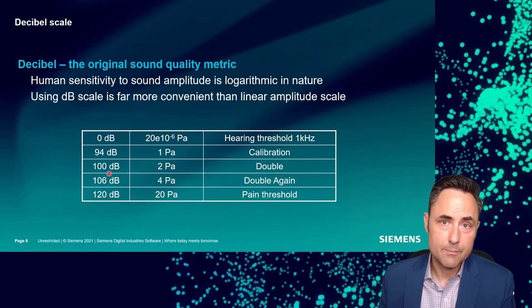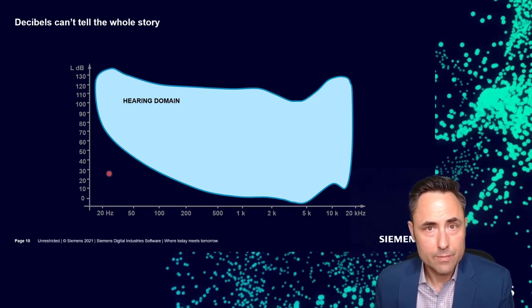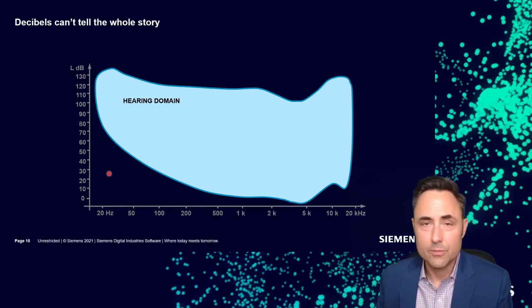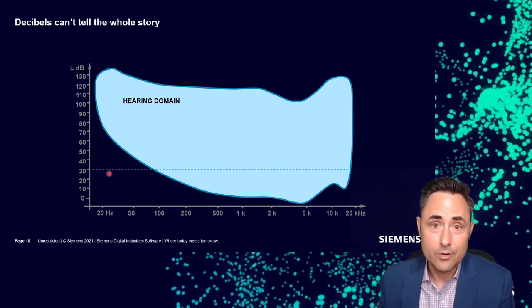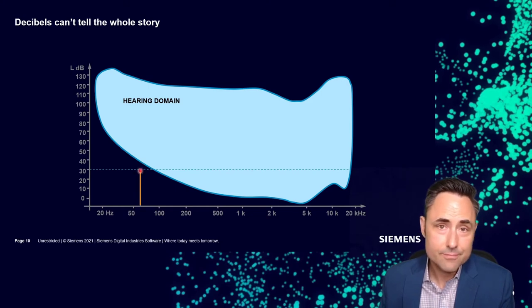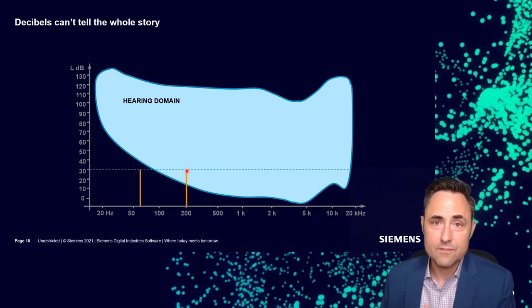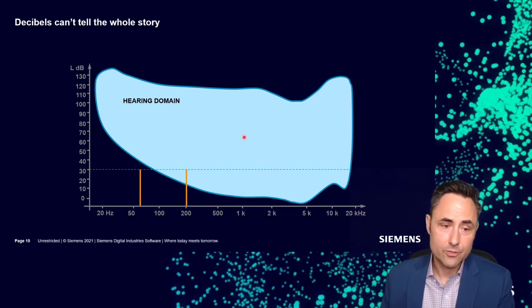There's another thing to keep in mind with decibels: they don't tell a complete story. If a machine makes 30 dB, is that a problem? Well, it depends on frequency. At 60 hertz, we can't even hear 30 dB. But at 200 hertz, 30 dB is audible and might be a problem. Just the decibel value isn't enough — we also need to report frequency information to understand whether a given sound will matter to a human listener.